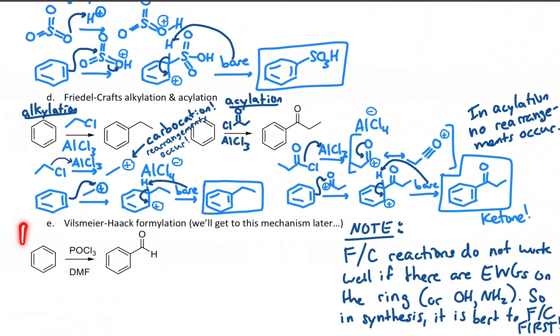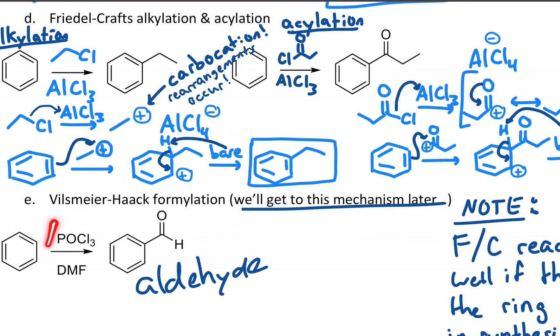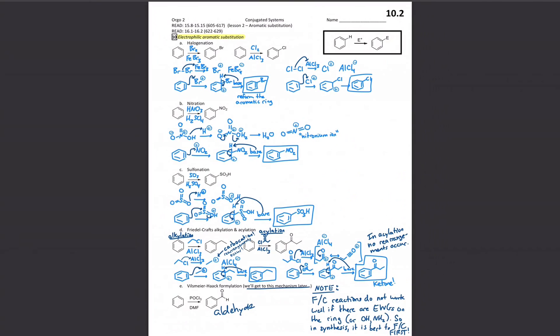At the bottom of your page is one other reaction that also makes carbon-carbon bonds on benzene rings. It actually makes an aldehyde, so it's a little bit different than the Friedel-Crafts reaction. It's called the Vilsmeier-Haack reaction and we will get to this mechanism later. The reagents are POCl3 with dimethylformamide, almost always abbreviated as DMF.